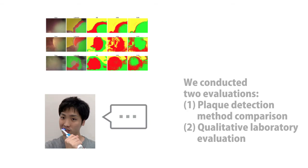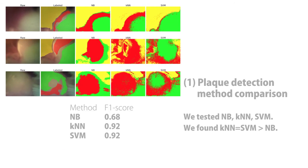We conducted two evaluations. In the first evaluation, we tested a number of different classification algorithms to see which performed best, including Naive Bayes, K-Nearest Neighbor, and Support Vector Machine. We found that K-Nearest Neighbor and Support Vector Machine outperformed Naive Bayes.